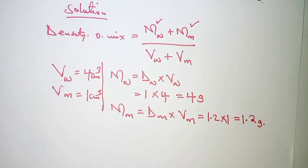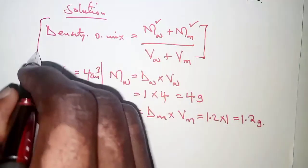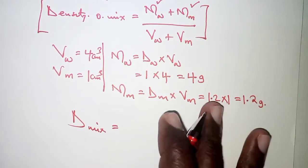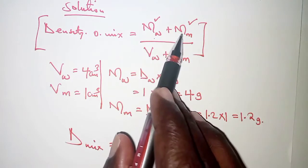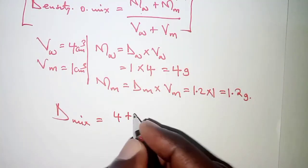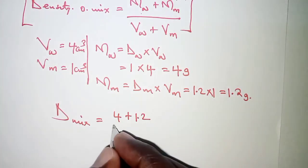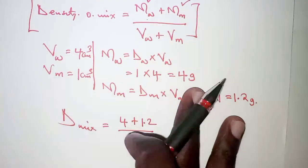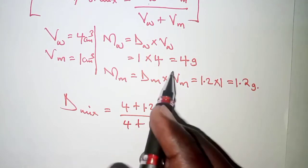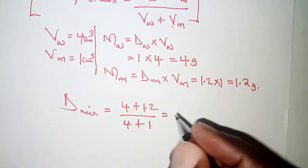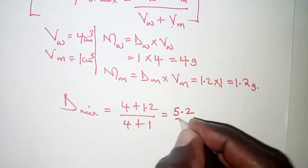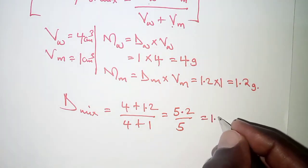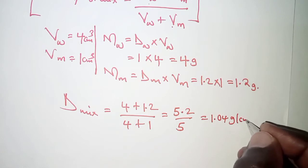From here we can do our substitutions. Density of the mixture equals mass of water plus mass of milk, that is 4 grams plus 1.2 grams, divided by the total volume — volume of water plus volume of milk, that is 4 plus 1. So we have 5.2 divided by 5, which gives us 1.04 grams per cubic centimeter.